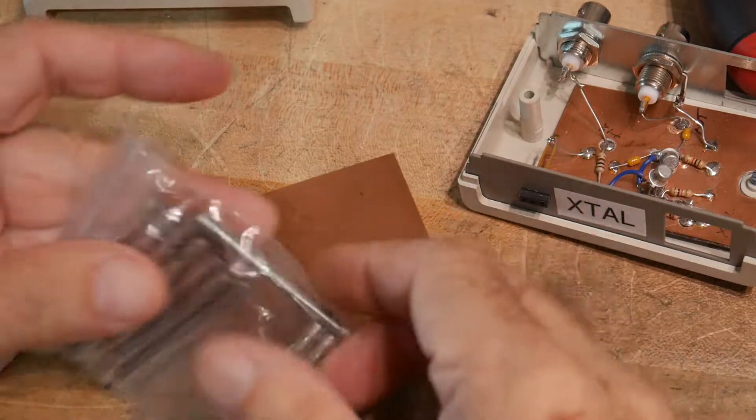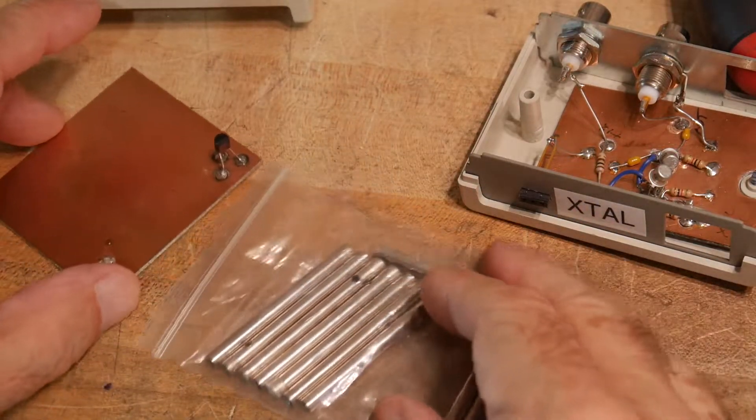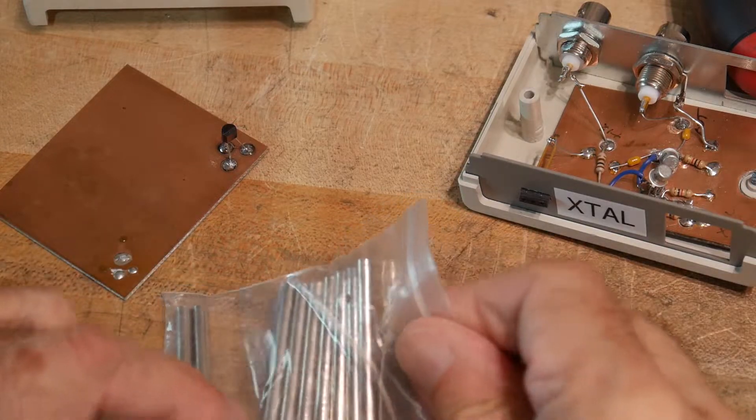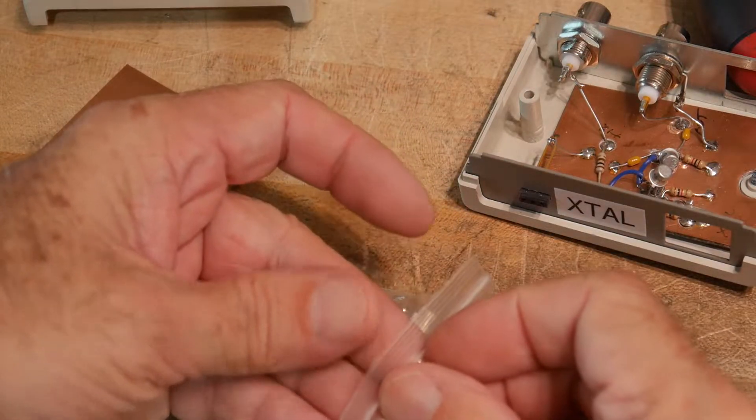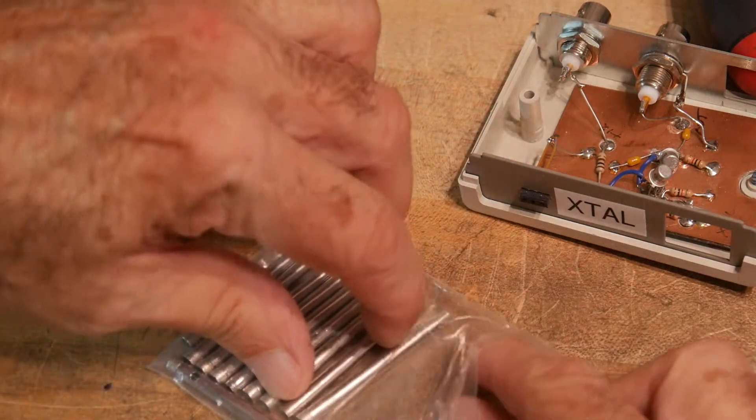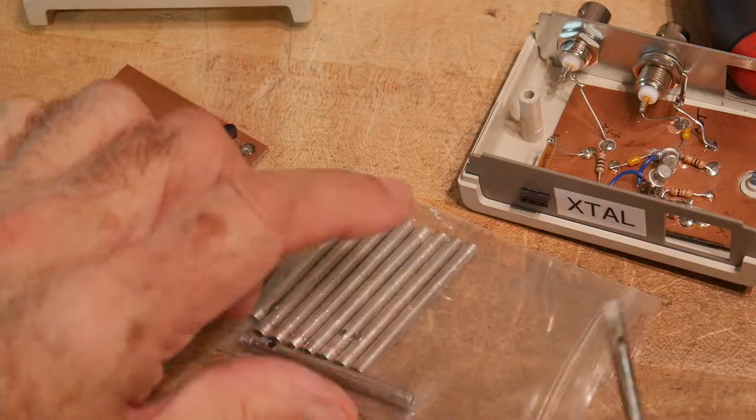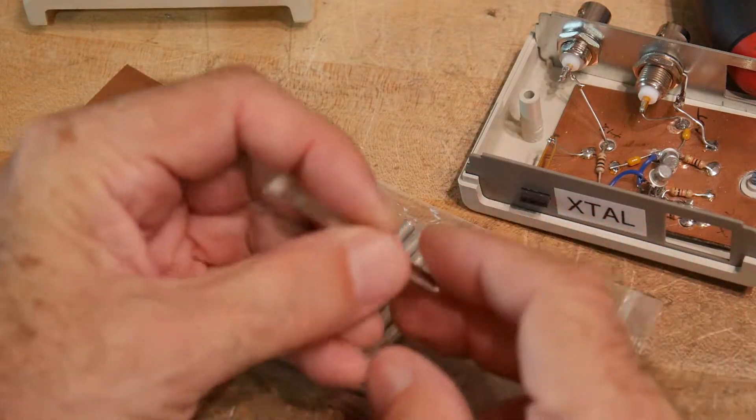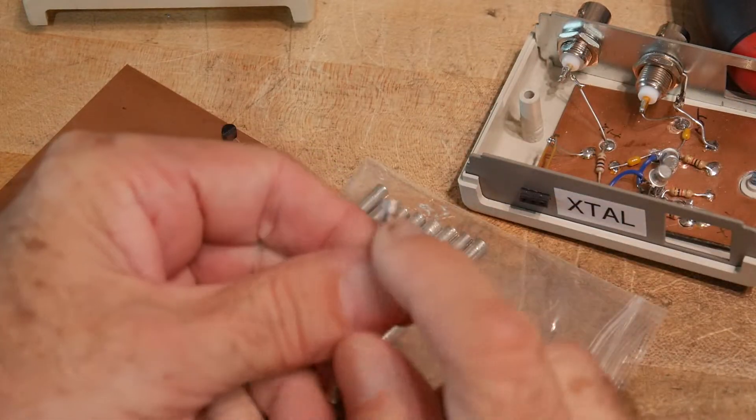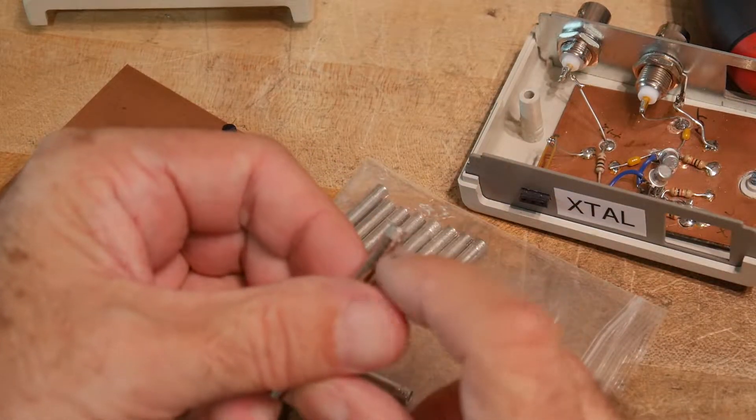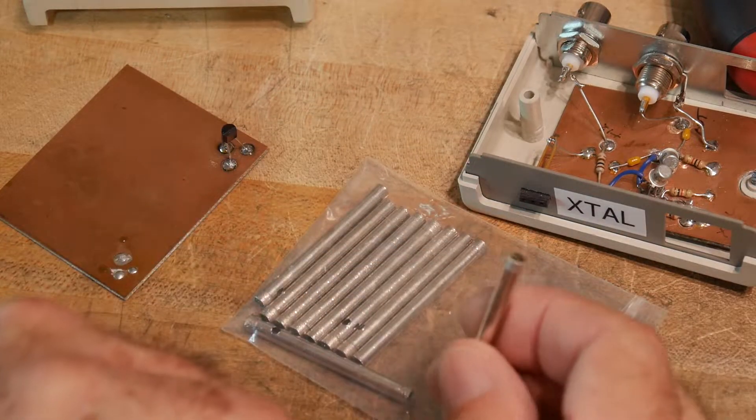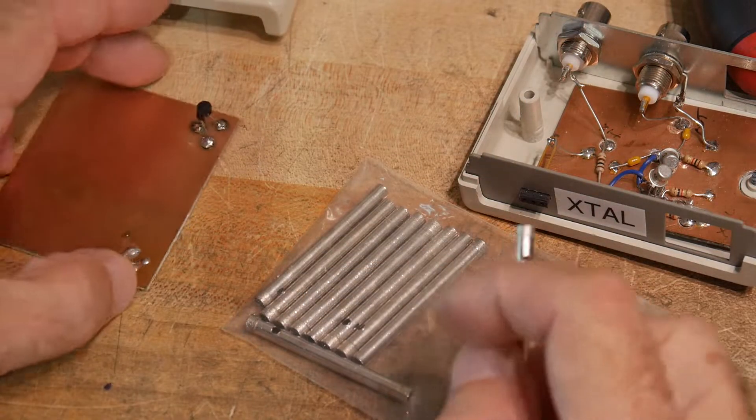Alright, so I found these on eBay. These are hole saws of a particular type. I believe these are 5mm diameter. You can get them in different sizes. But what they are, they're just a tube and then they are dipped in diamond compound. So they end up being abrasive in a round shape.